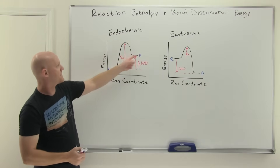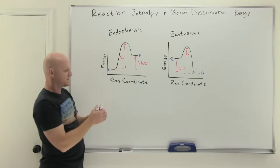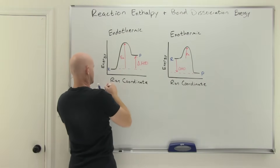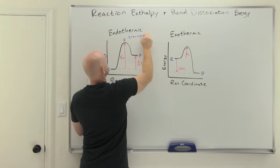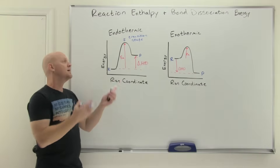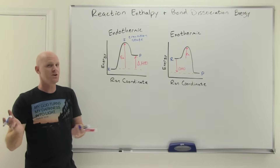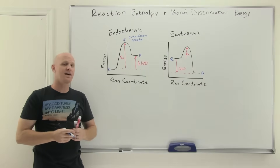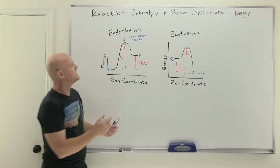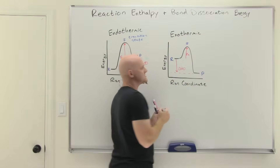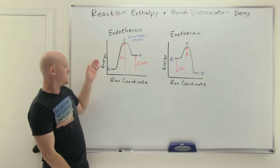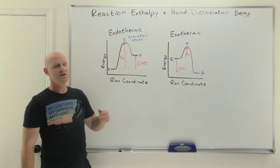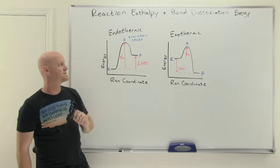We've got the reactant, we've got the product. The top of your energy hill is called your transition state, often given this double dagger symbol. Sometimes in Gen Chem we also call that the activated complex, but in Organic Chemistry we refer to it almost exclusively as a transition state — it's just not the common term we use. The top of the hill is our transition state, and just a reminder that your transition state cannot be isolated. You can isolate a reactant, a product, or even an intermediate if you have a multi-step reaction, but you can never isolate the transition state.